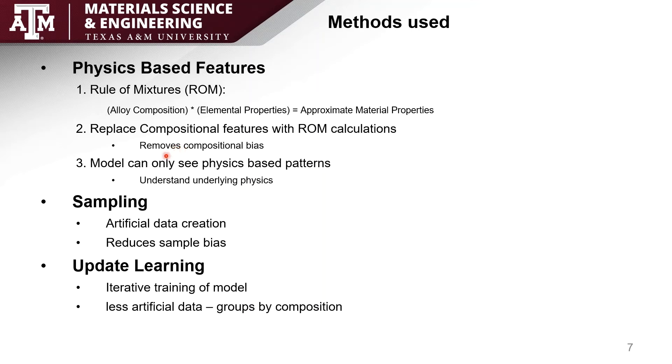This helps remove the compositional bias that exists in the model. Next the model will be able to understand the physics-based patterns that connect to the printability rather than looking at the composition and relating that to its printability. This will help understand the underlying physics of what material properties make a good print and what material properties don't.